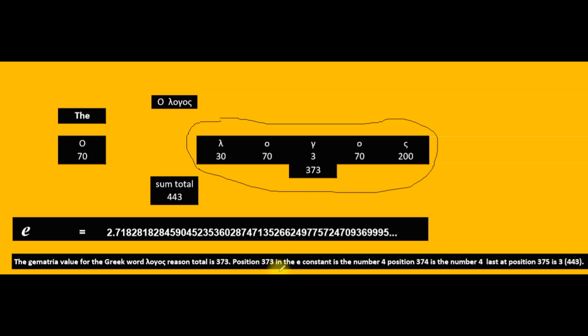At position 373 in the e constant natural logarithm is the number 4. At position 374 is the number 4. And at the last position is 3: 443.